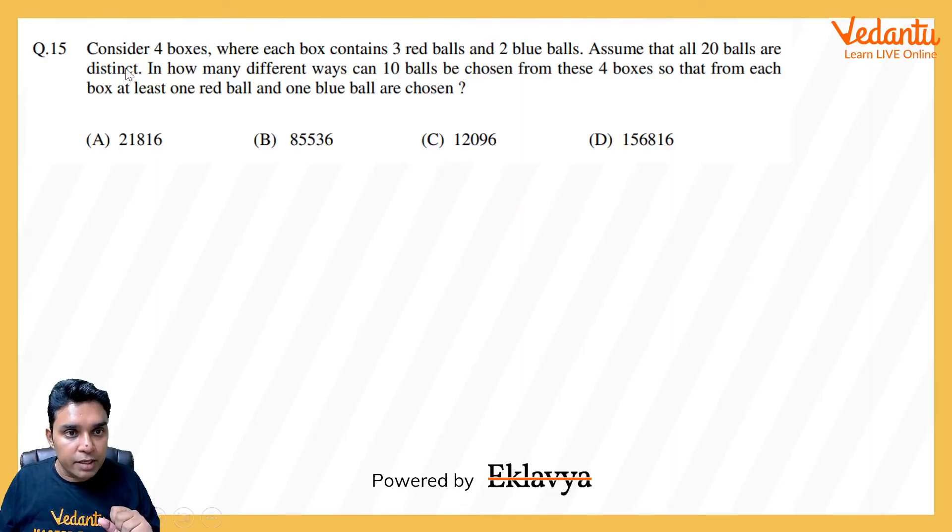Here we are given: consider 4 boxes where each box contains 3 red balls and 2 blue balls. Assume that all 20 balls from these 4 boxes are distinct. In how many different ways can 10 balls be chosen from these 4 boxes so that from each box at least 1 red ball and 1 blue ball are chosen?